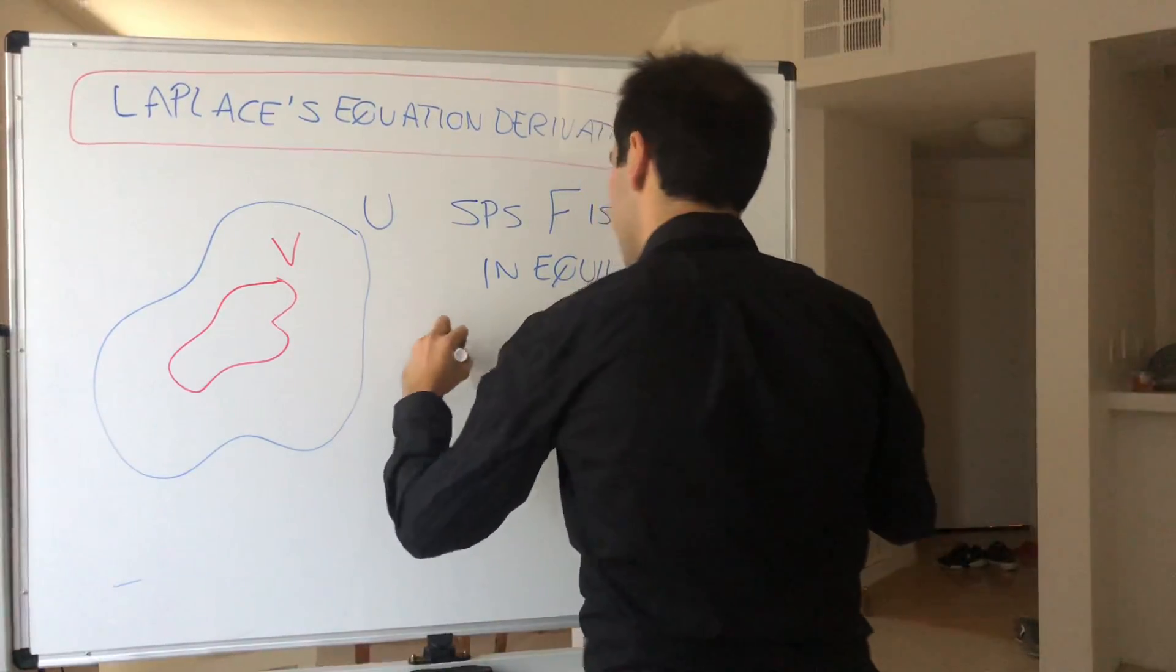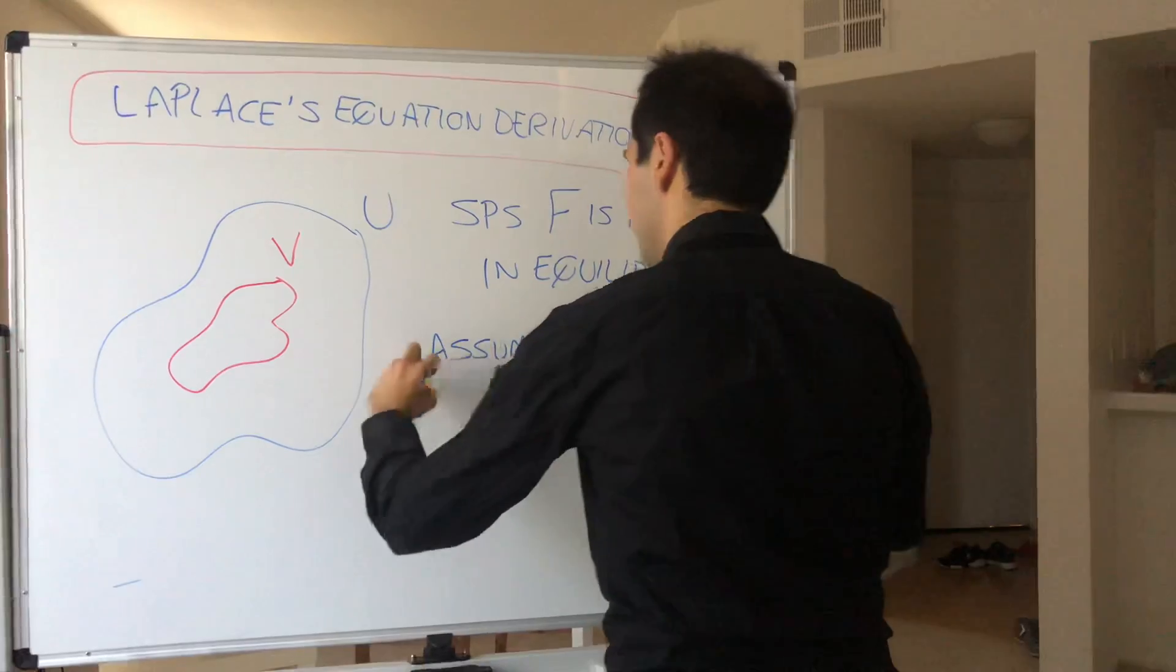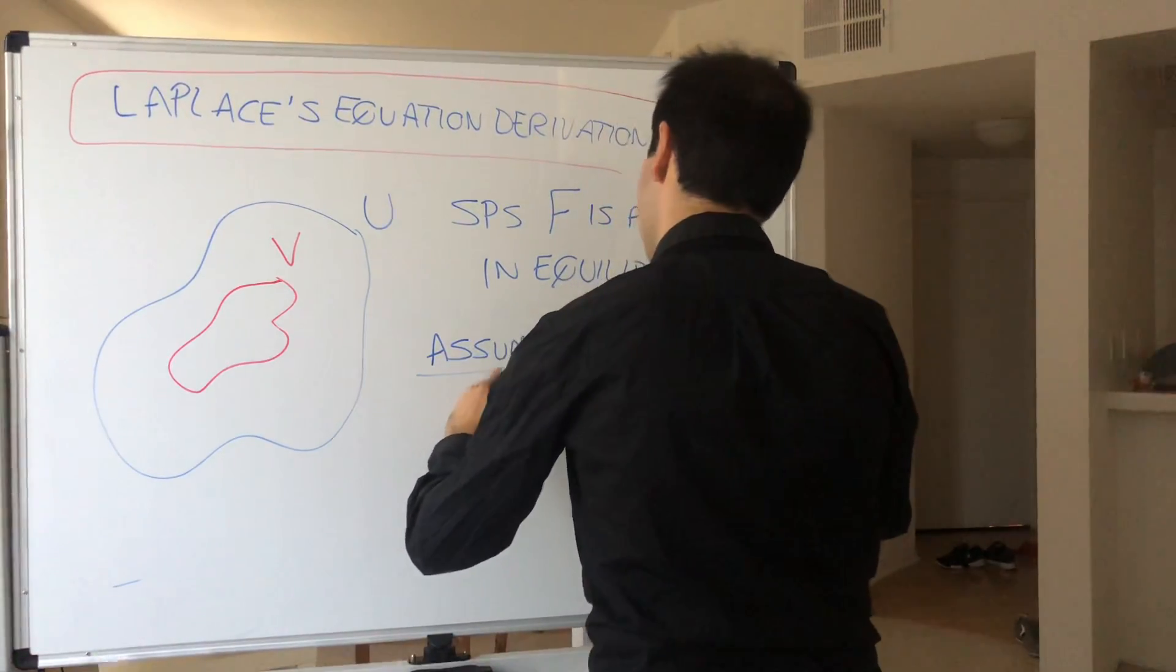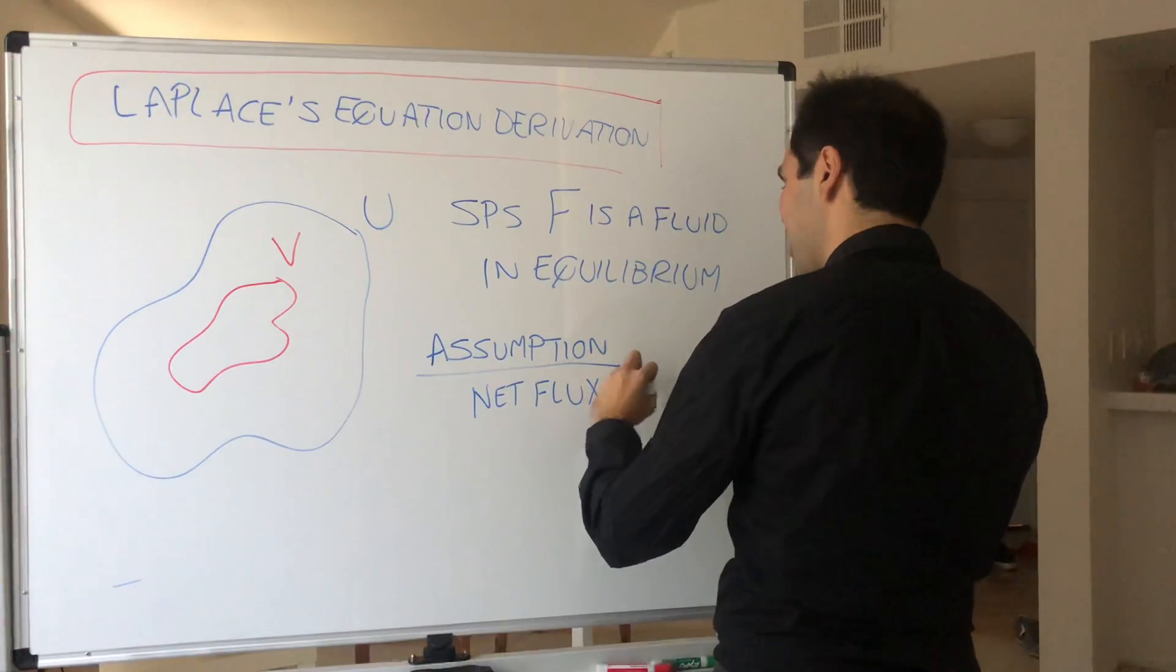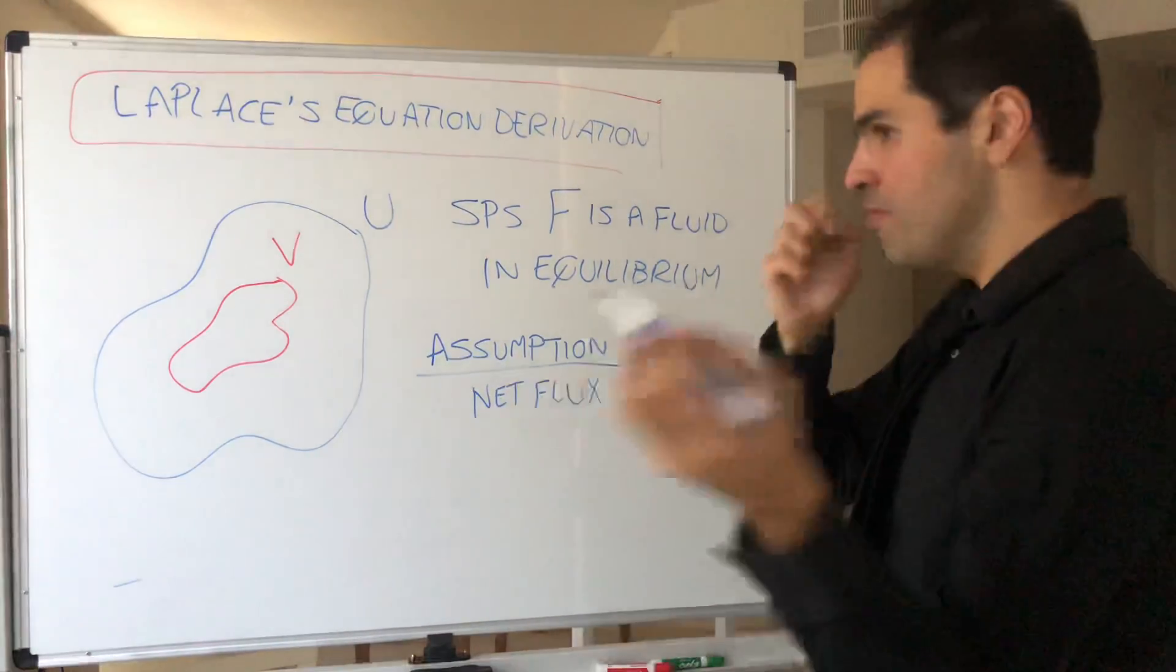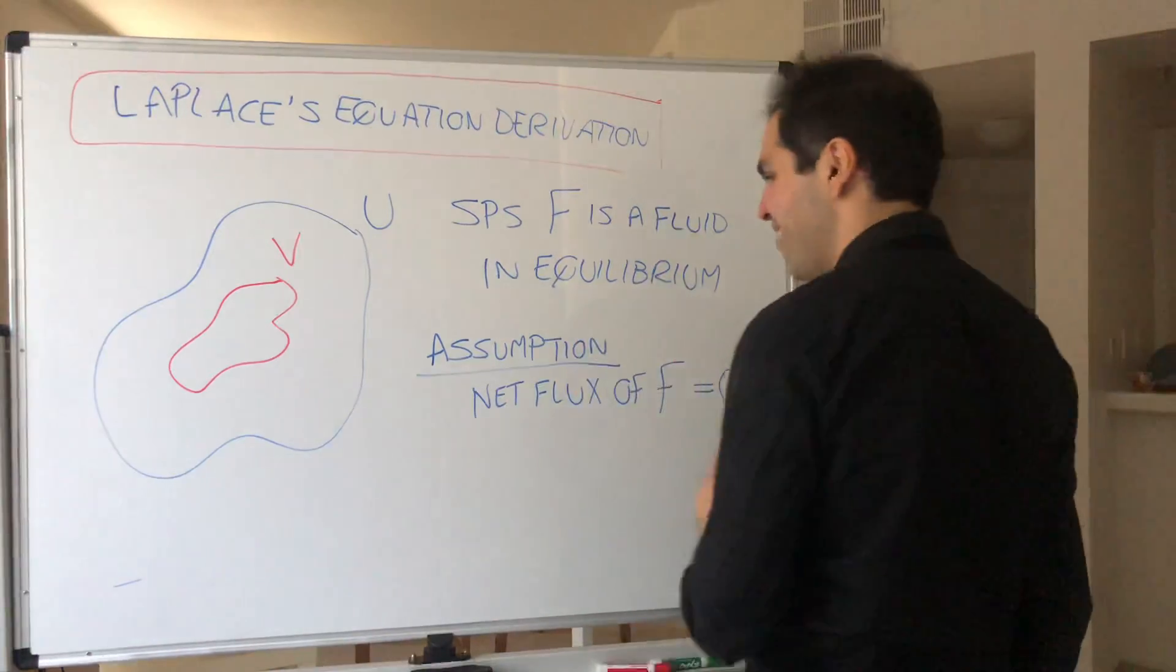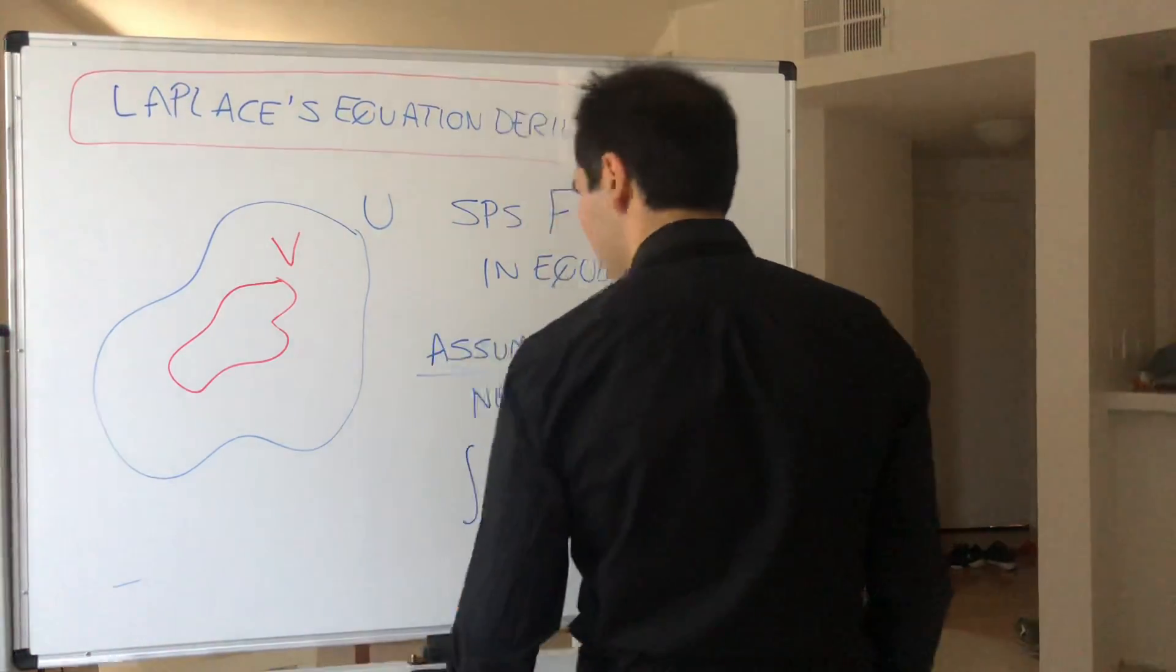So assumption, the net flux, again, not Netflix, but net flux of F is zero. And again, in terms of integrals and stuff, what the net flux represents, it's just a surface integral.